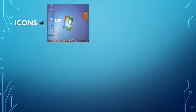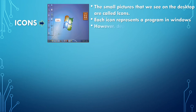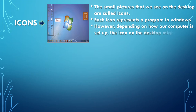Icons: The small pictures that we see on the desktop are called icons. Each icon represents a program in Windows. Depending on how our computer is set up, the icons on the desktop might be different from those shown here.